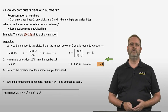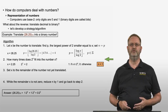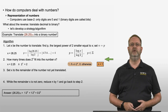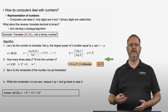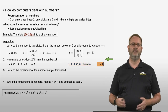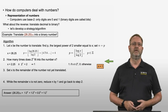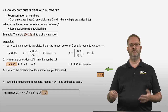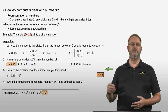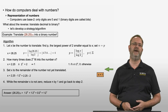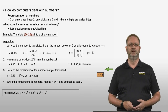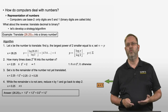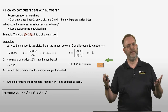With n equal to 1, we compare the remainder 2.25 to 2 to the power 1, which is 2. Since 2.25 is greater than or equal to 2, the digit is 1. We add plus 1 times 2 to the power 1. Step 3: we subtract 2 from 2.25, leaving a remainder of 0.25. That remainder is not zero, so we reduce n from 1 to 0 and go back to step 2.